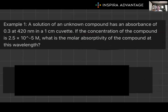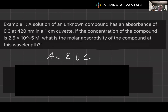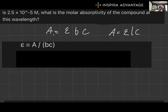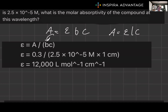Let's practice applying this knowledge to some MCAT-style problems. Say we have a solution of an unknown compound that has an absorbance of 0.3 at 420 nanometers in a one-centimeter cuvette. If the concentration of the compound is 2.5 × 10⁻⁵ molar, what is the molar absorptivity of the compound at this wavelength? We should be thinking Beer-Lambert: A equals epsilon times B times C. We rearrange by dividing A by B times C, plug in the values, and we get 12,000 liters per mole per centimeter.